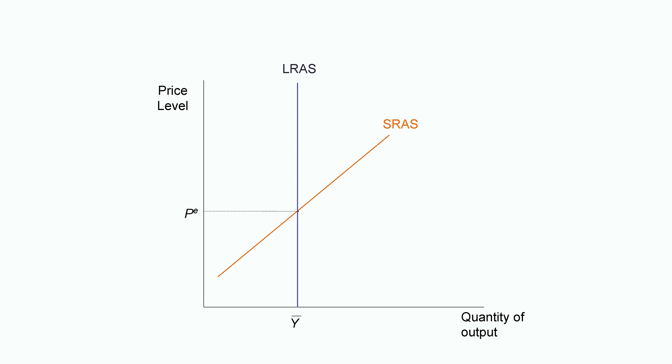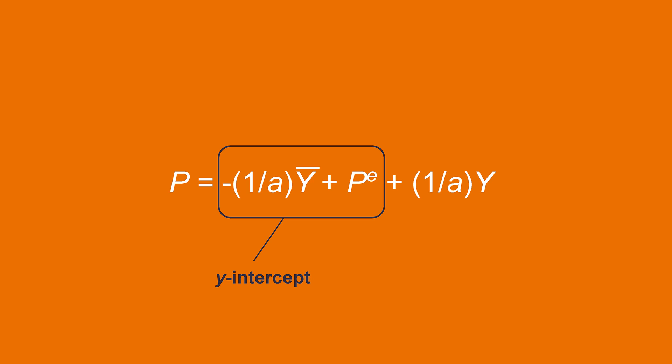Just make the right substitutions into the equation and you will be able to see this. So, a higher value of PE must mean that short run aggregate supply intersects LRAS at a higher point, which means that SRAS must shift upward or inward when expected price level increases. We can also think about this mathematically. If you look at the short run aggregate supply equation, PE is part of the Y intercept for the SRAS. So, a higher value of PE means a higher Y intercept, which means SRAS must shift up or inward.